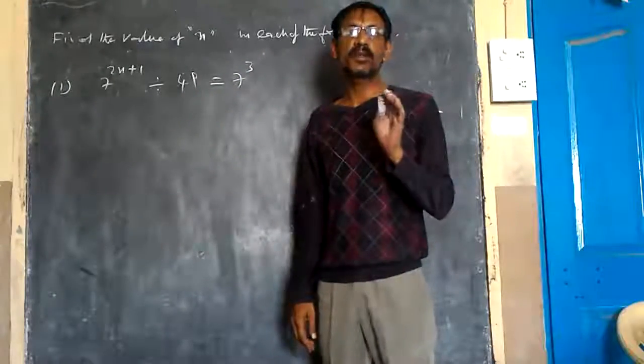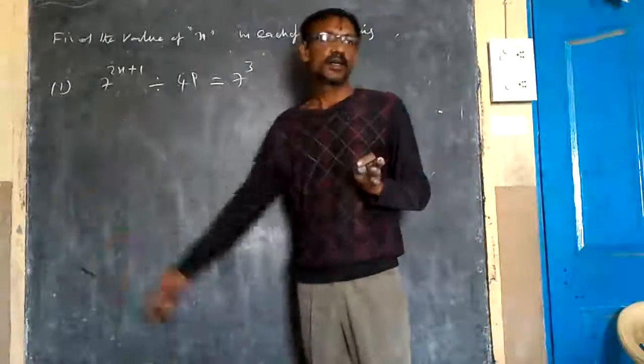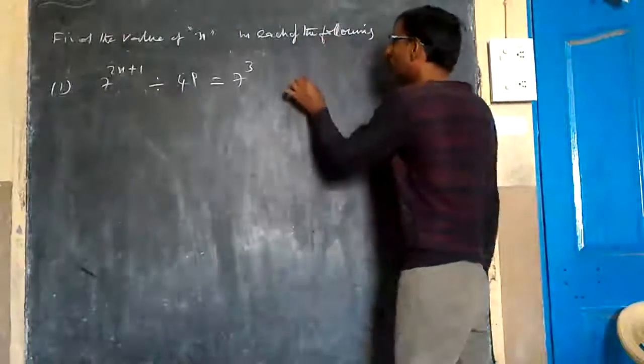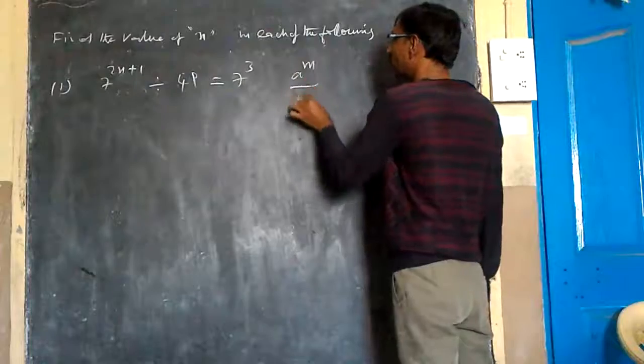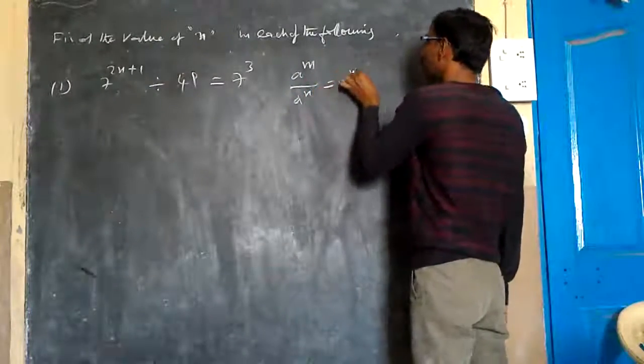Every time, simplify the LHS. LHS means what? Left hand side. Here I would like to use the rule: a to the power of m divided by a to the power of n equals a to the power of m minus n.